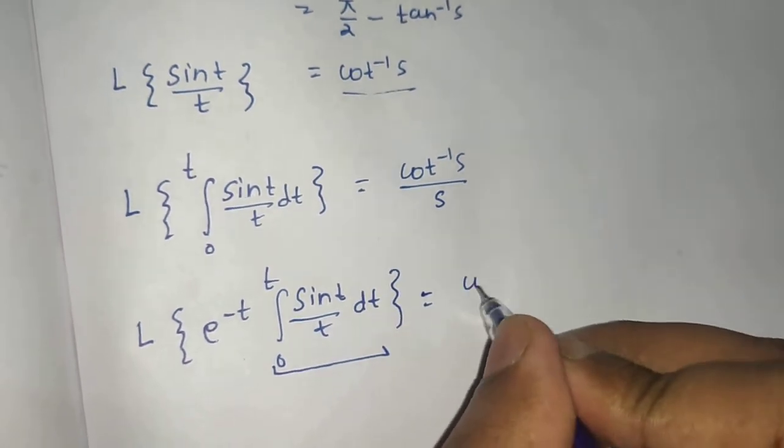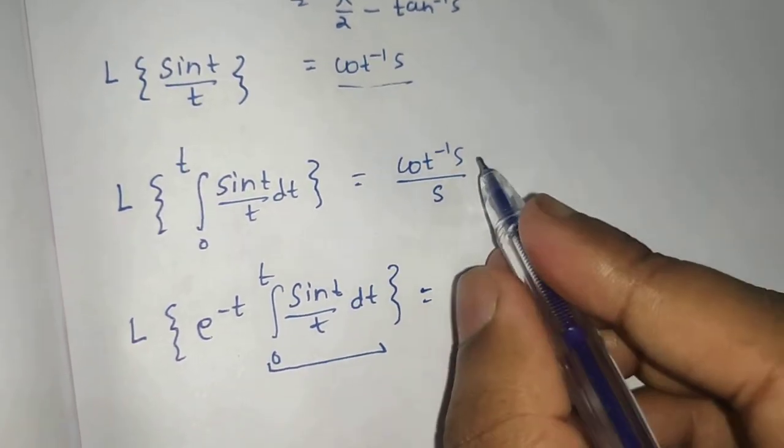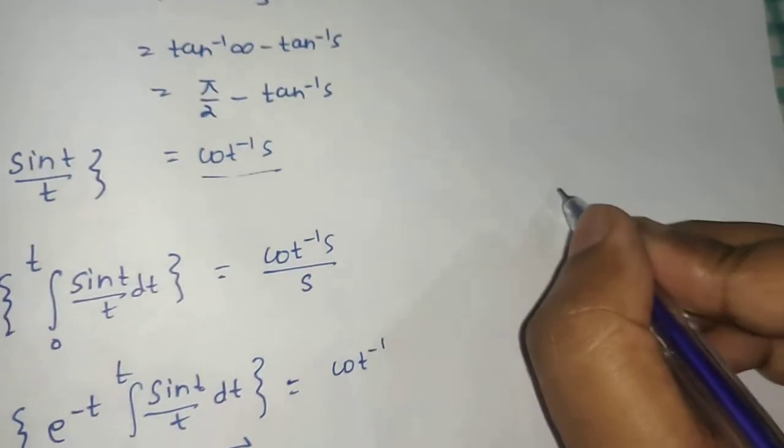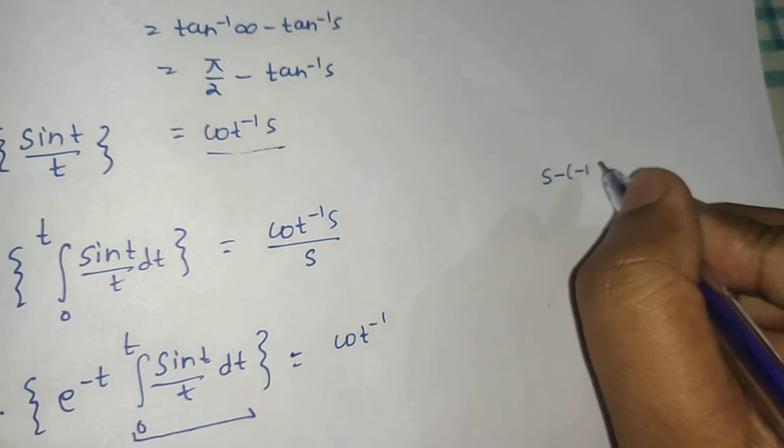Wherever you find s, replace that by s - a. So here we will replace s by s - a. Here a is -1, so s minus (-1).